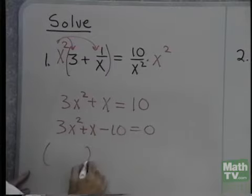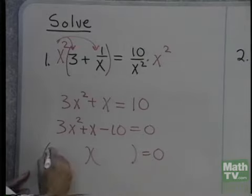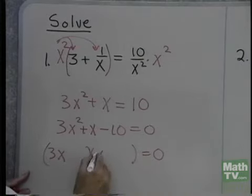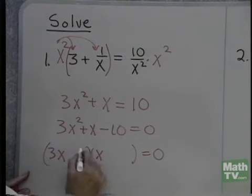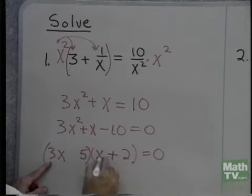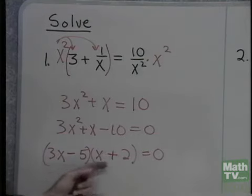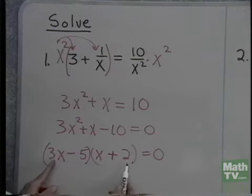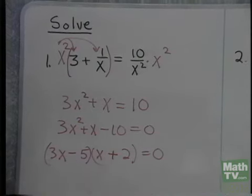I'll factor this. Let's try 3x and x, and how about 5 and 2? Inside I have 5x, outside I have 6x. So that should work. So 3x minus 5, x plus 2 equals 0. Is that right? Negative 5x positive 6x is positive 1x.